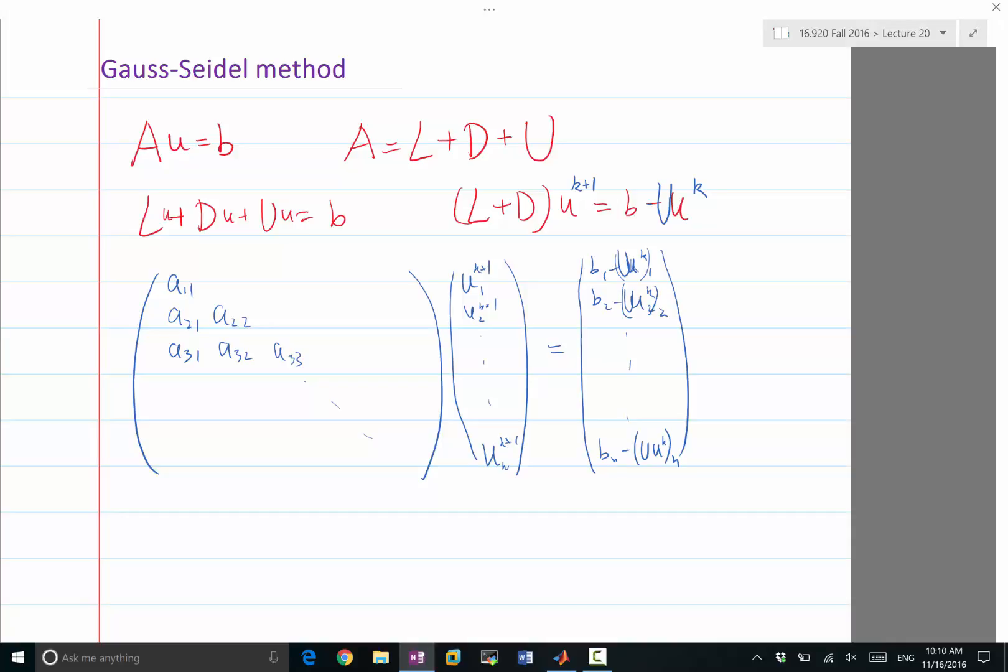Now plug that into the second row. This is called forward elimination. Once we know the first entry, we can use the first entry to figure out a21 times u1k+1. And therefore, the only unknown in solving the second row is the second entry of the unknown. The first one is already known.